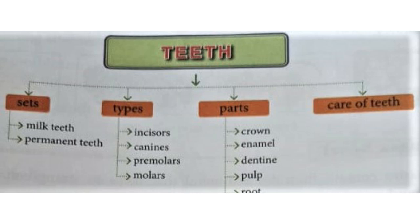Number 1: sets of teeth. Number 2: types of teeth and their position. Number 3: structure and function of each type of tooth. Number 4: parts of a tooth. Number 5: tooth decay. And finally, number 6: care of teeth and gums.